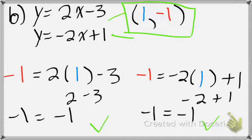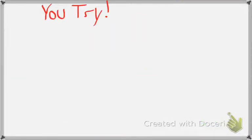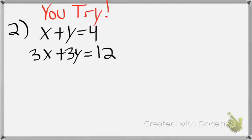Now I'm going to have you do two more examples. Remember: if y is not already by itself, get y by itself first. You're going to do two more examples, check yourself, and we'll be done. We'll do more word problems in class and take it to the next level. For now, just focus on the arithmetic of the graphing method. Hit pause and give this one a shot — get y by itself first for both equations.